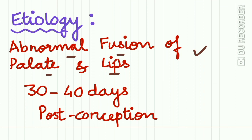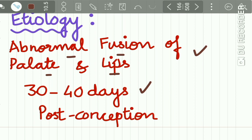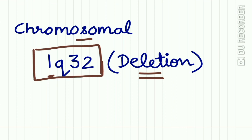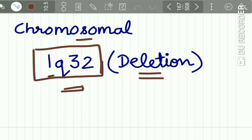The etiology of Van der Woude Syndrome occurs due to abnormal fusion of the palate and the lips during intra-uterine life. This mostly occurs during 30 to 40 days post conception. The chromosome involved is a deletion at the 1q32 band of the chromosome.